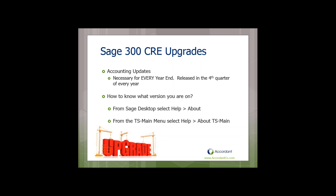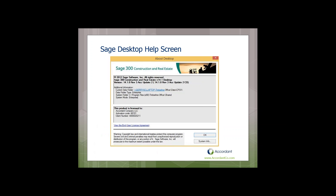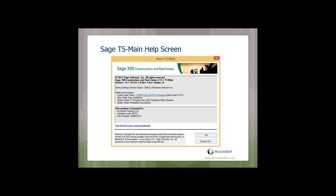How do you know what version you're on? From the Sage desktop, select Help About and it'll tell you. From TS Main, select Help About TS Main. The key part to look at is the accounting update in parentheses — for example, 14.1 Rev 3, Accounting Update 2. Rev 3 is the CD revision originally installed from. You don't need to worry about the full build number like 14.1.19 — that's mostly irrelevant.